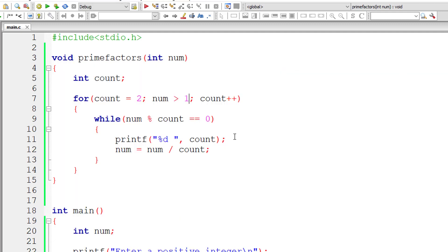So prime factors of 315 is 3, 3, 5, 7. So this is how we find prime factors of a user entered number using functions.